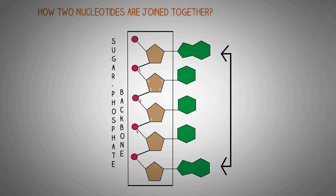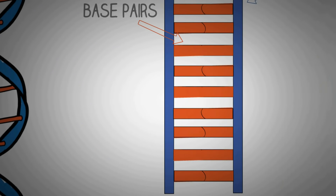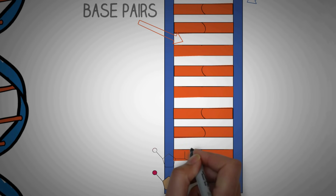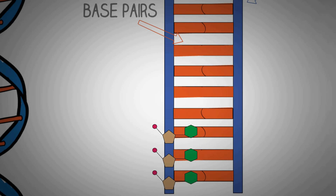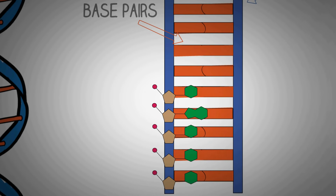This essentially represents a single strand of DNA. If you go back to the stepladder model, you can clearly understand how the different nucleotides in a single strand of DNA are joined together to form the sugar-phosphate backbone, represented by the blue vertical lines, with the orange bars in the center representing the base pairs connecting the two strands.